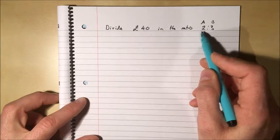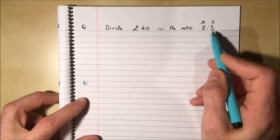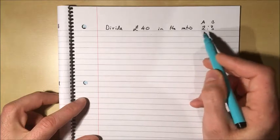So the way to think about it, person A gets, think of these numbers as shares. Person A gets two shares every time person B gets three shares. So there are five shares in total.